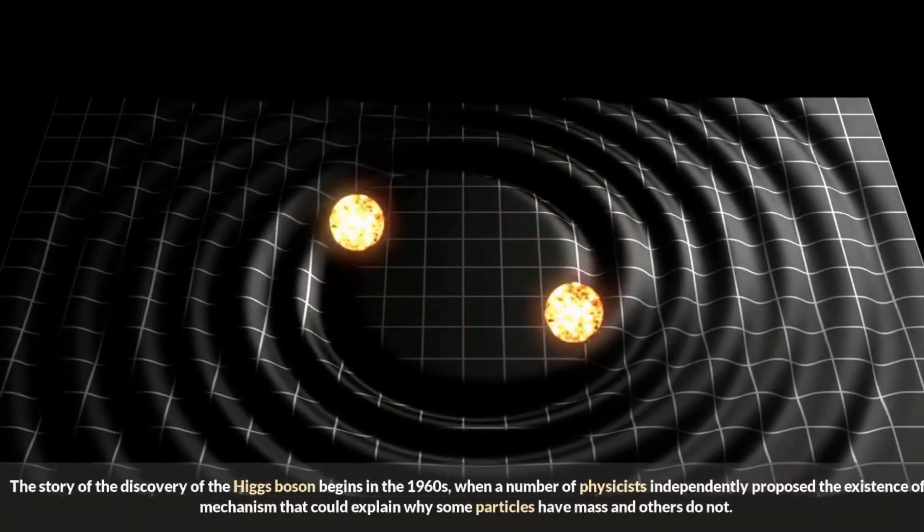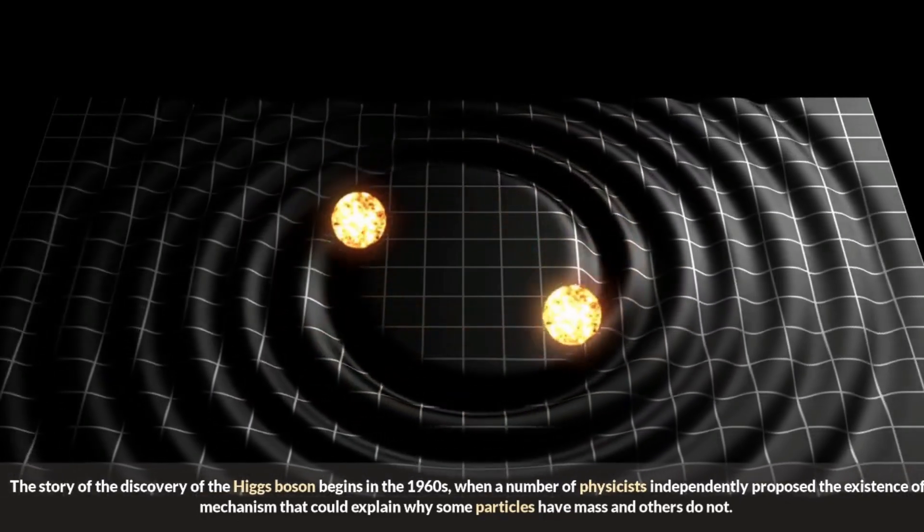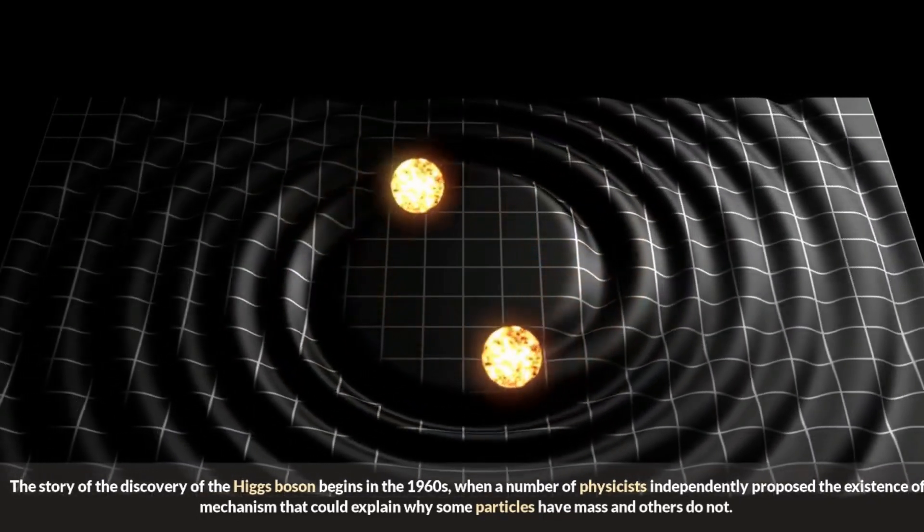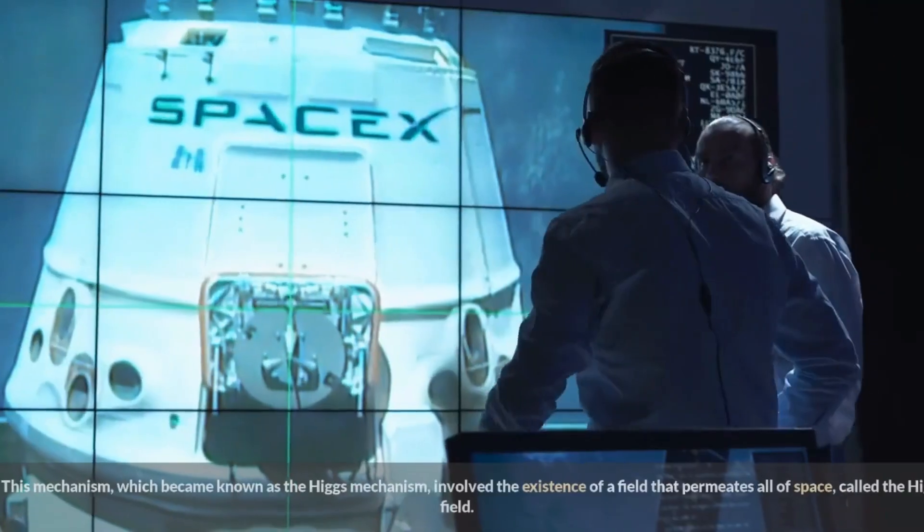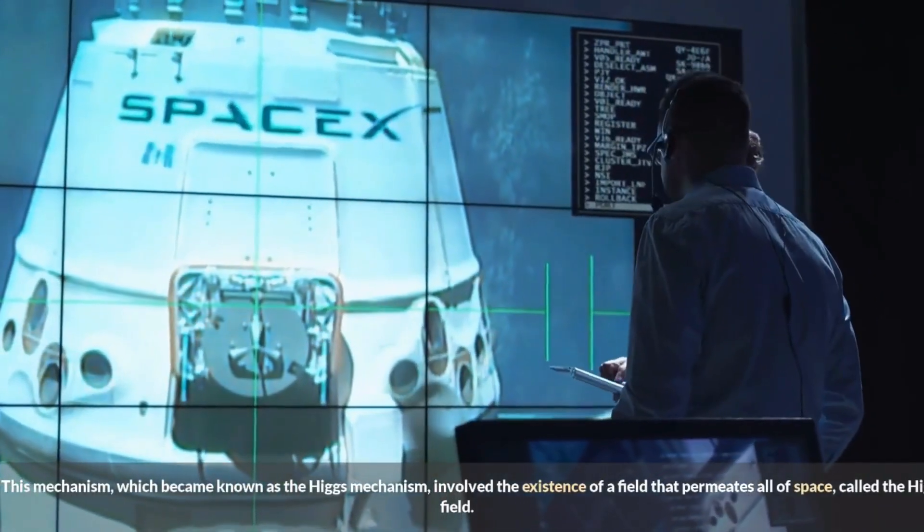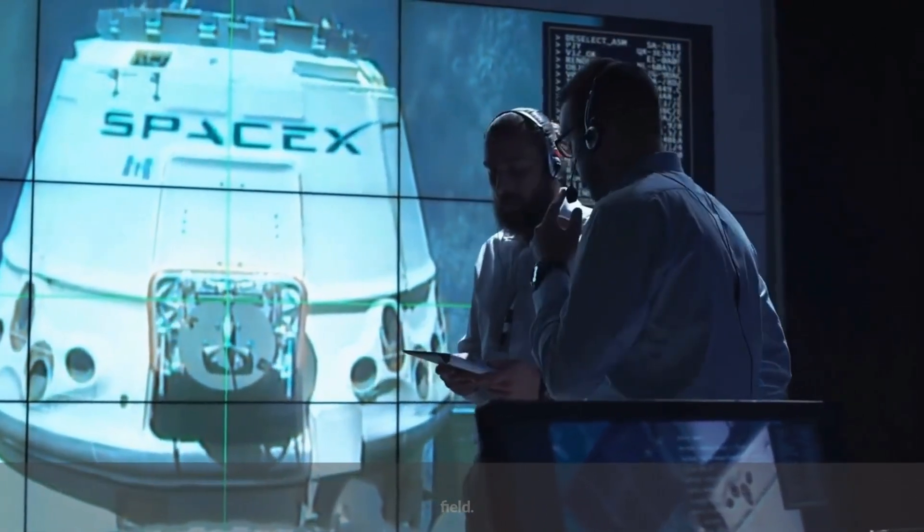The story of the discovery of the Higgs boson begins in the 1960s, when a number of physicists independently proposed the existence of a mechanism that could explain why some particles have mass and others do not. This mechanism, which became known as the Higgs mechanism, involved the existence of a field that permeates all of space, called the Higgs field.